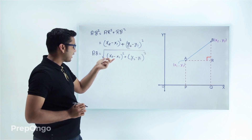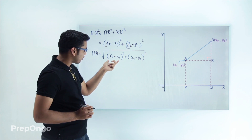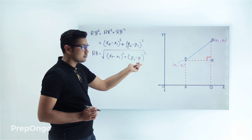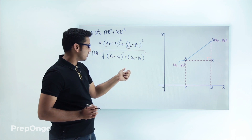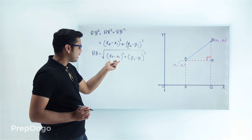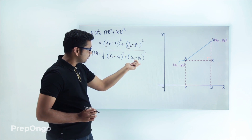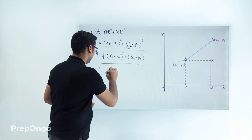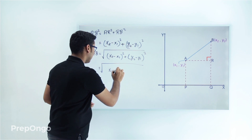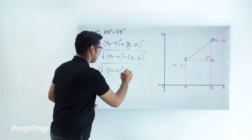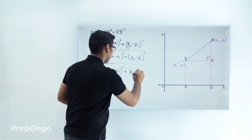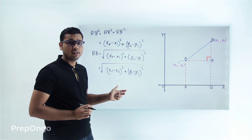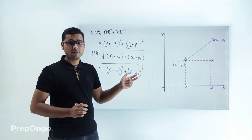Now if you see that if we take the negative sign common from the first term, it will square and become positive. Similarly from the second term, it will also become positive. So instead of (x2 minus x1) we can also write (x1 minus x2), and instead of (y2 minus y1) we can also write (y1 minus y2). So this is equivalent to the square root of (x1 minus x2) whole square plus (y1 minus y2) whole square. We can apply either result to find the distance between any two points if their coordinates are given.